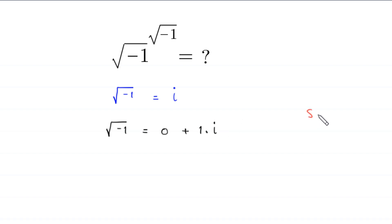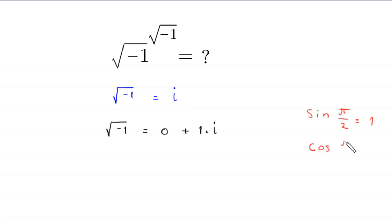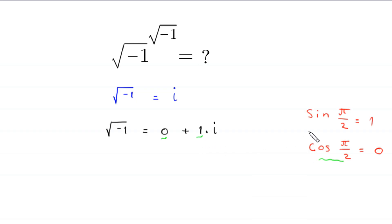Now, sin of pi over 2 is equal to 1, and cos of pi over 2 is equal to 0. So in this equation, we replace this 0 with cos of pi over 2, and we replace this 1 with sin of pi over 2.